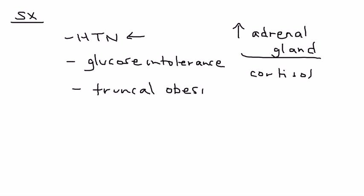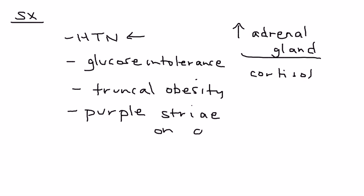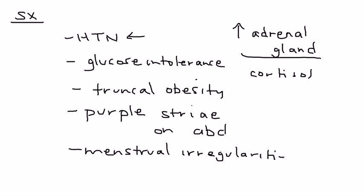Additional symptoms include obesity — in particular truncal obesity — which is a direct result of cortisol. Purple striae are a very common physical exam finding and commonly described in clinical vignettes; these are stretch mark-like lines seen on the patient's abdomen. If the patient is female, menstrual irregularities are also a key symptom.